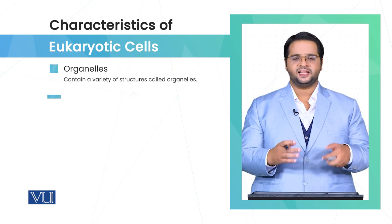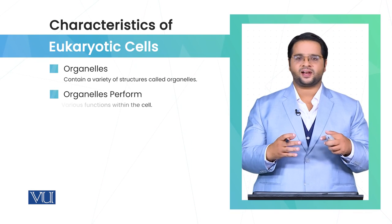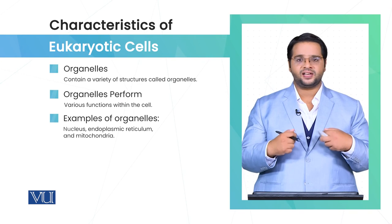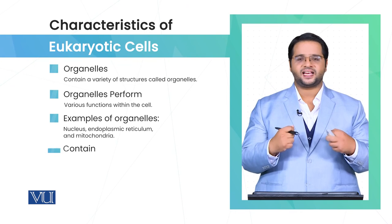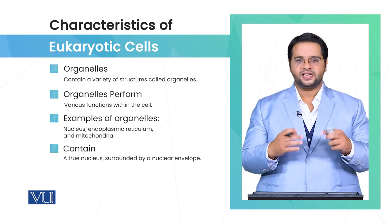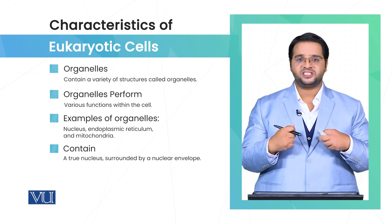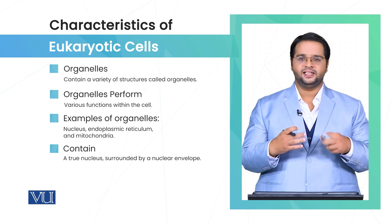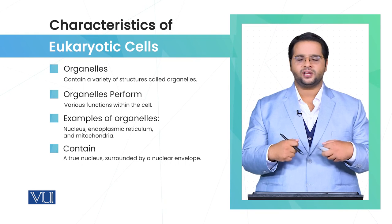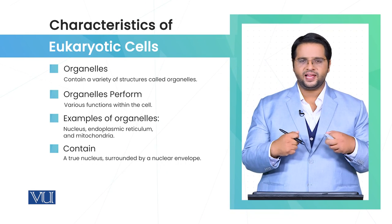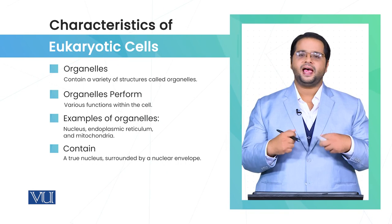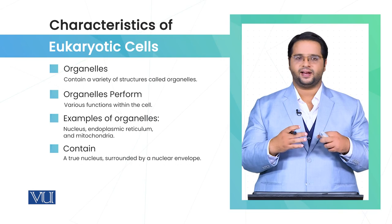As mentioned earlier, there are numerous organelles in the cell and these organelles perform a diverse array of functions, which also differentiates the eukaryotic cell from the prokaryotic cell. These include the true nucleus, endoplasmic reticulum, and mitochondria.